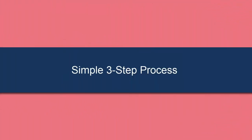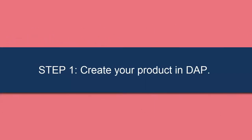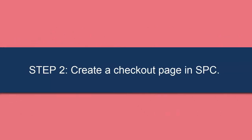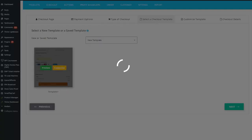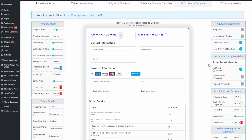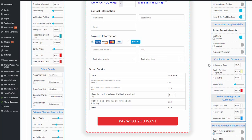It's really easy to set up a pay what you want button in SPC — it's a simple three-step process. Step one: create your product in Dapp. This could be a one-off product or a subscription product. Step two: create a checkout page in SPC. This checkout page is different from regular checkout pages. When creating your checkout page for a donation or pay what you want button, in the type of checkout tab, you must select Donation as the type of checkout.